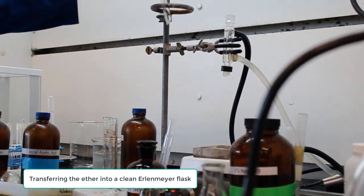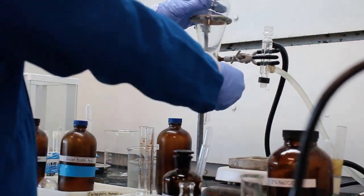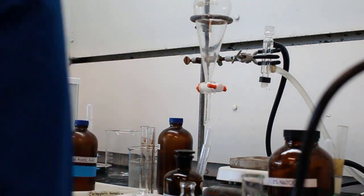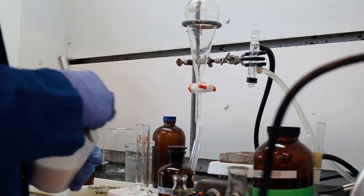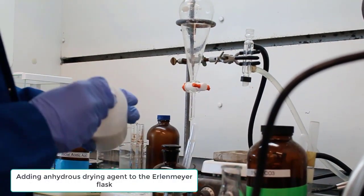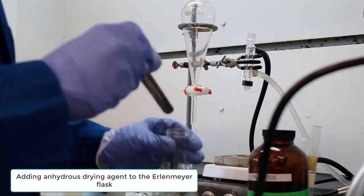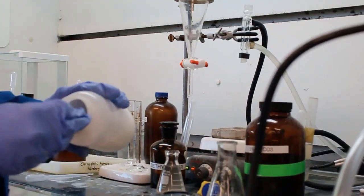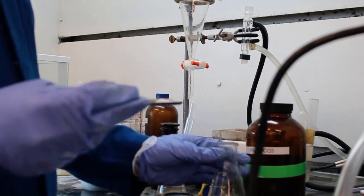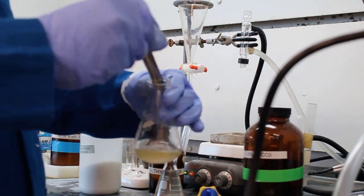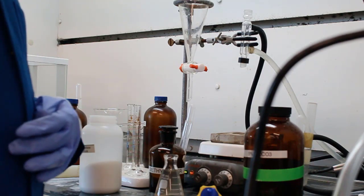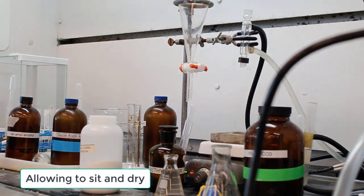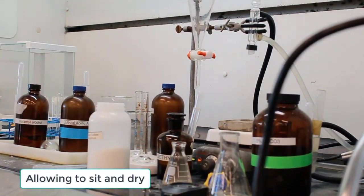Now transferring what should be our clean product mixture and diethyl ether into an Erlenmeyer flask. Now going to add drying agent to it. In this case, the drying agent used was sodium sulfate. It's just going to absorb any of the water, allowing it to sit.